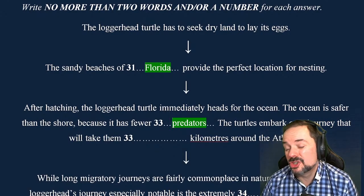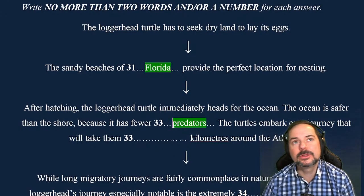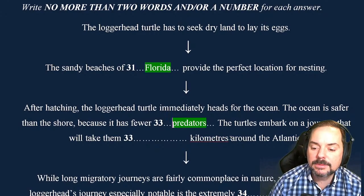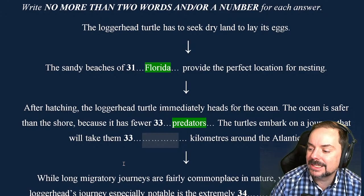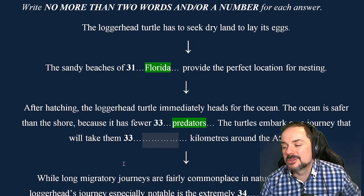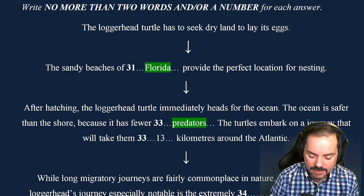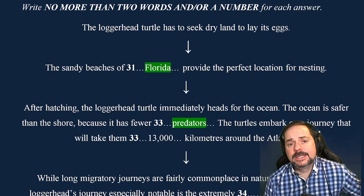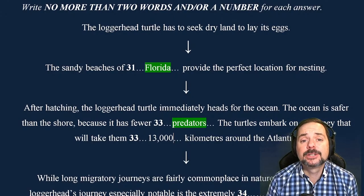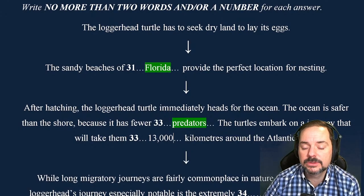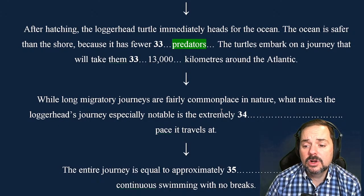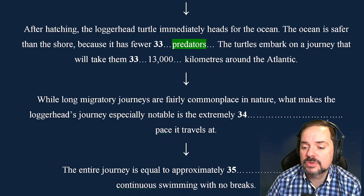Question 33: the turtles embark on a journey of 13,000 kilometres — write it as the number, three zeros, not two or four. Don't make mistakes with your zeros. Question 34: while long migratory journeys are commonplace in nature, what makes the loggerhead's journey especially notable is its extremely slow speed — the answer is the adjective 'sluggish.' Sluggish means slow, like the slug animal. Question 35: the entire journey is equal to approximately two years of continuous swimming. Write the number 2 and 'years' — just that.